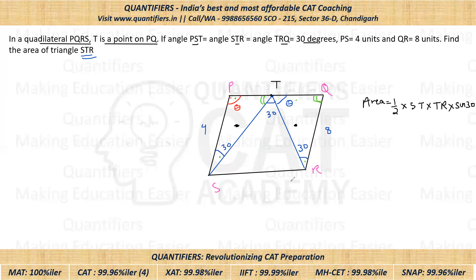Let's apply similarity. For corresponding sides, opposite to theta degrees in the first triangle we have ST, and in the second triangle opposite to theta we have QR = 8, so ST/8 is the ratio. Looking at the green angle in triangle PST, opposite to it is PS = 4, and in the other triangle opposite to the same angle is TR. So 4/TR is the corresponding ratio. Setting ST/8 = 4/TR, we get ST × TR = 32.